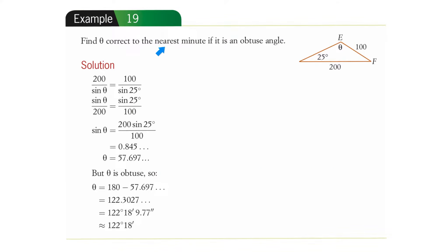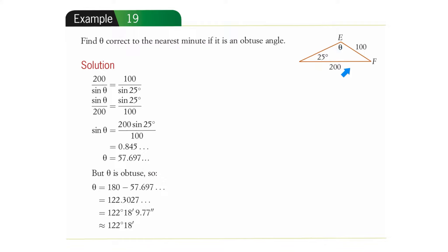Example 19: find theta correct to the nearest minute if it is an obtuse angle. We've got 25 degrees and opposite that is 100, and we've got 200 and opposite that is theta. So we can use the sine rule. In a test, they generally won't tell you to use the sine rule, but we can see we've got an angle with an opposite length and an unknown angle with an opposite length.